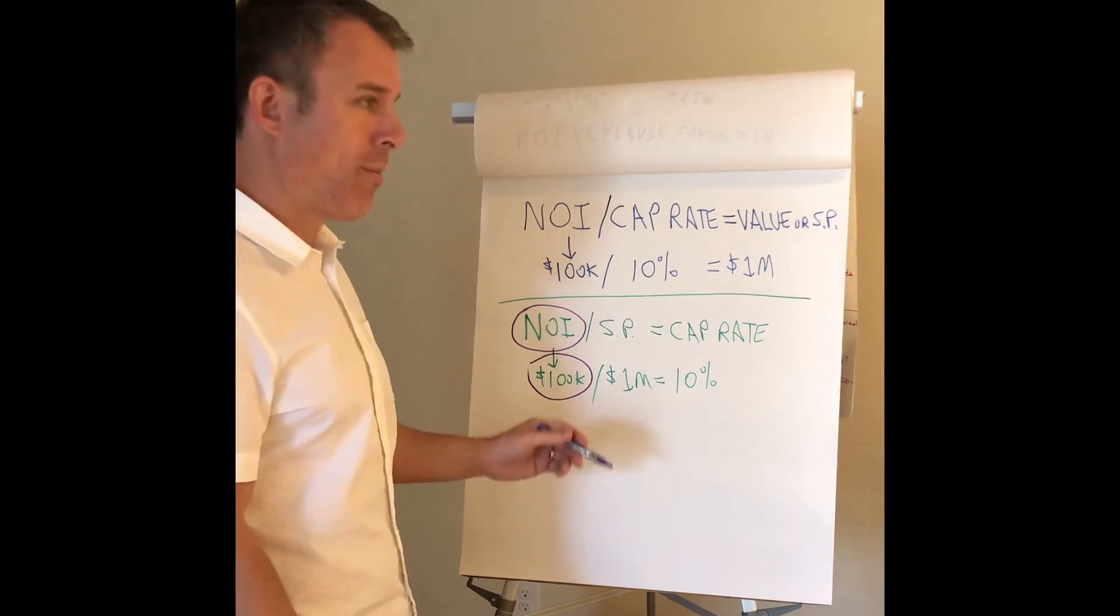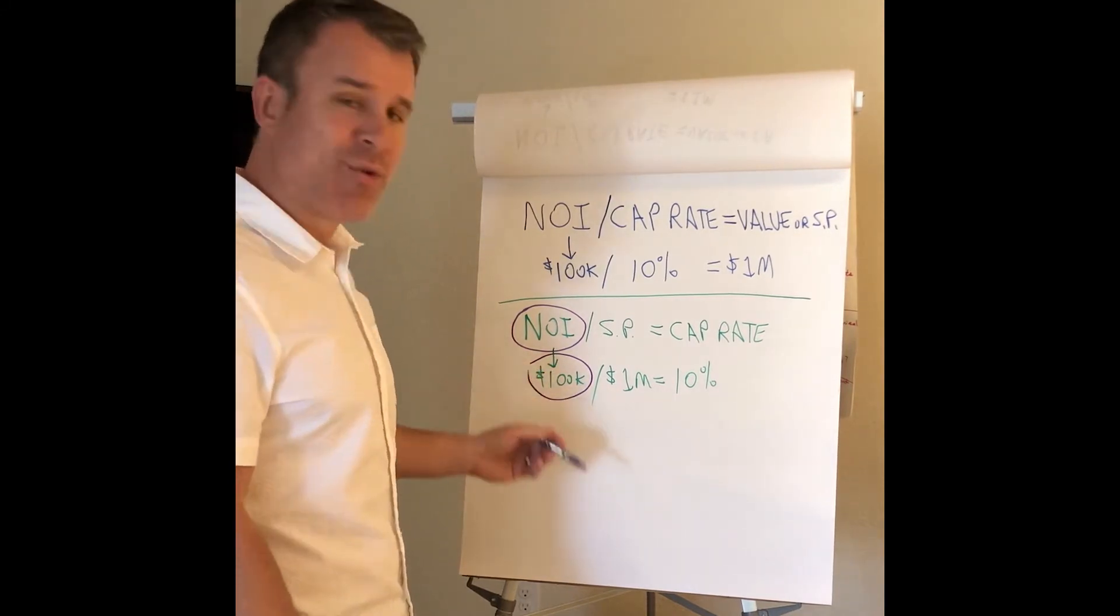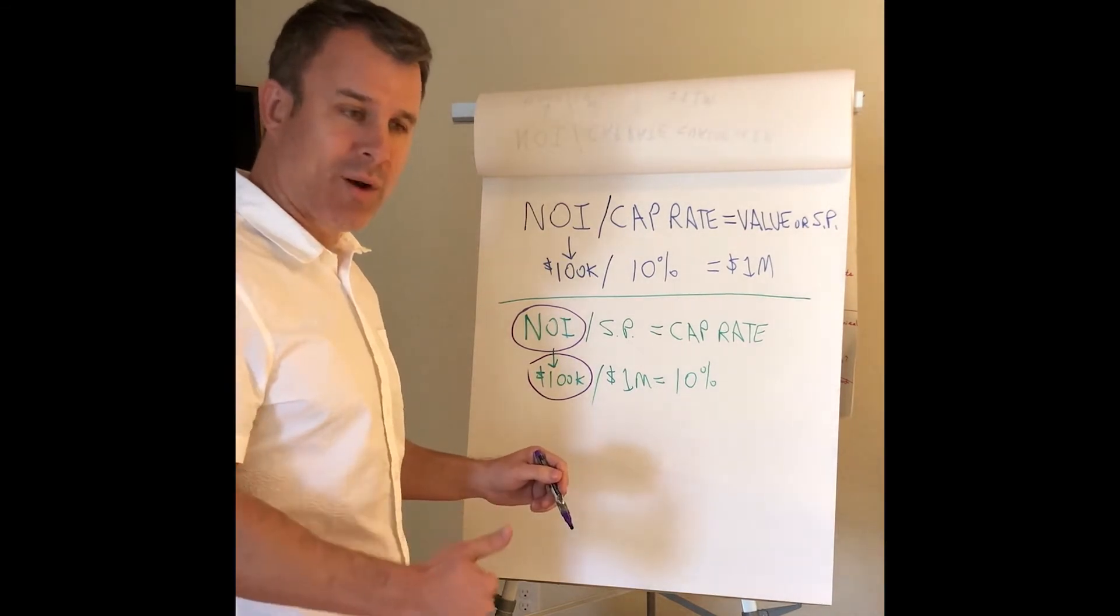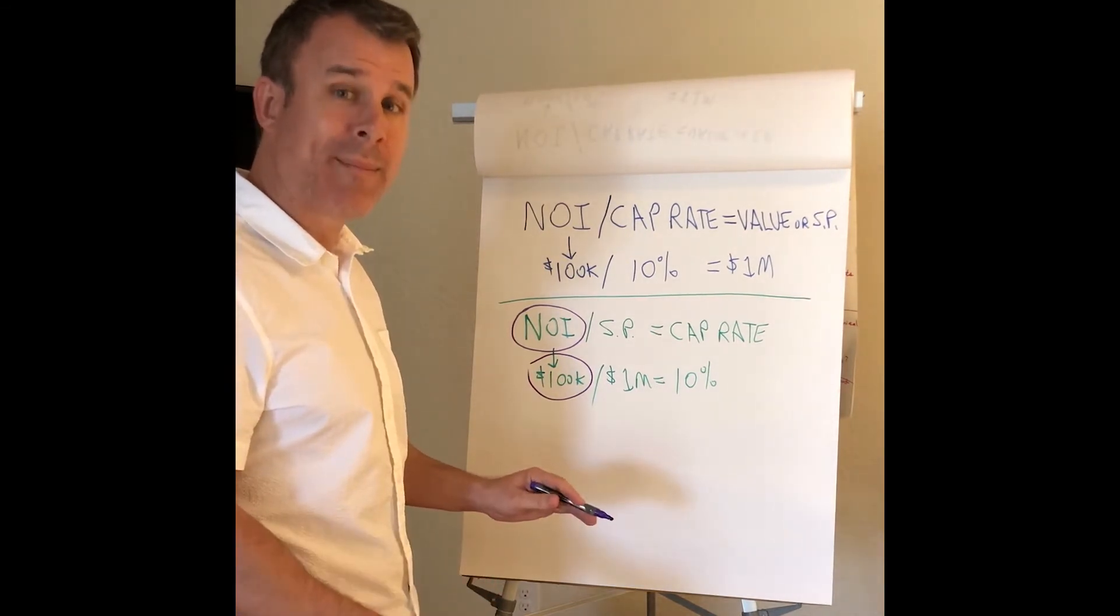So if I take this and said, my goodness, the NOI, I need to adjust it. I need to take money away from that because my taxes are going up, maybe my payroll is going up, whatever it might be.